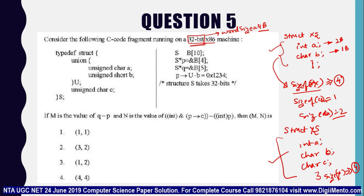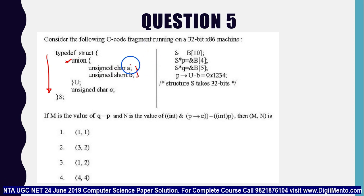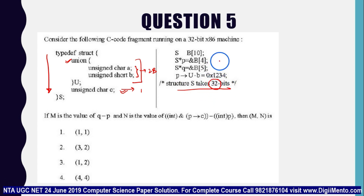I will embed the link of an article in the description and comment section where you can read why the size returns 4 bytes and not 3 bytes. Now, in this specific structure there is a union. In the union, the short value is 2 bytes and character c is 1 byte, but the size of this structure is still 32 bits — 4 bytes — because the machine is 32-bit.